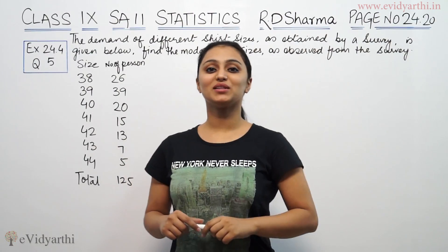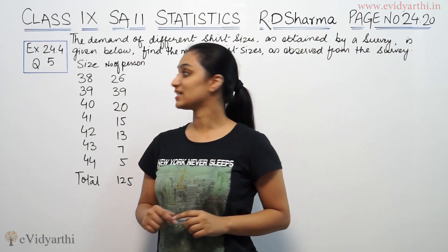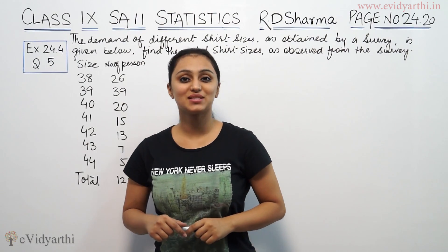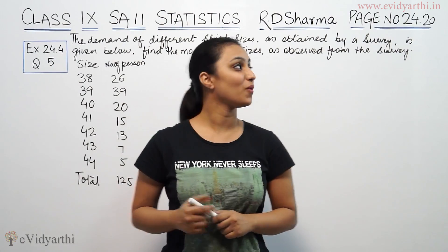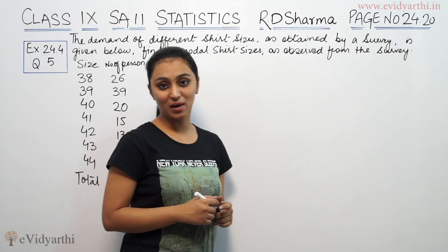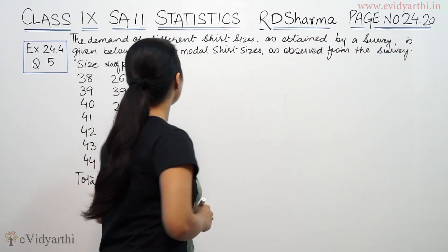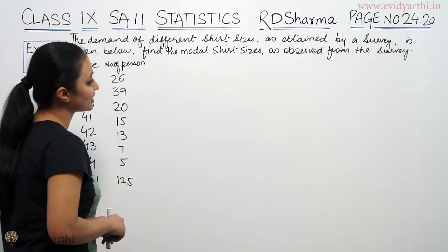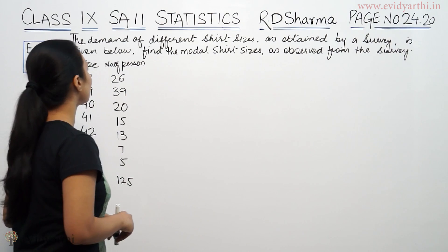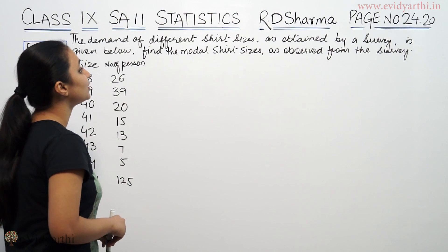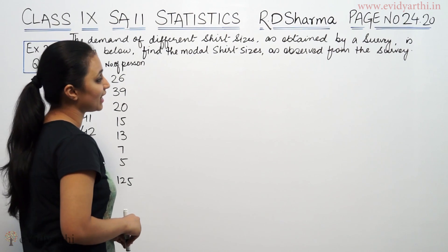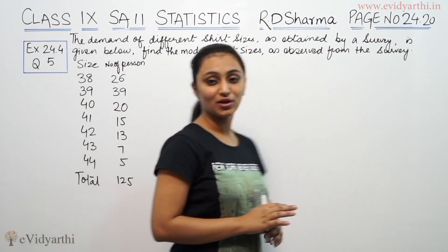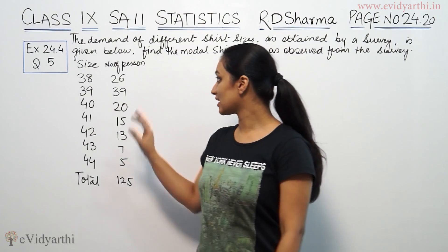Hi, this is Khushpoo with another question of Step 6. This is question number 5 from exercise 24.4, Phase 24.20 from Adi Sharma. The demand of different shirt sizes obtained by a survey is given below. Find the model shirt size as obtained from the survey. Scientists have given a different number of persons.